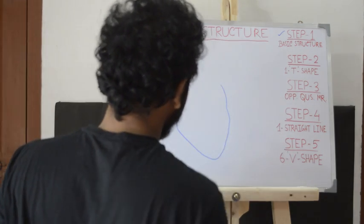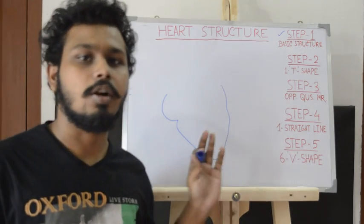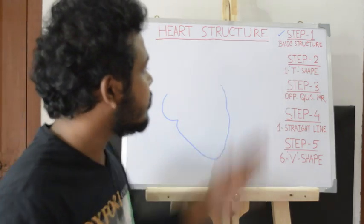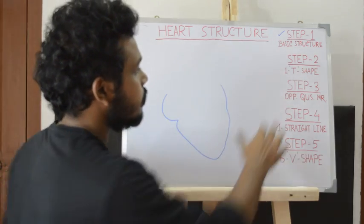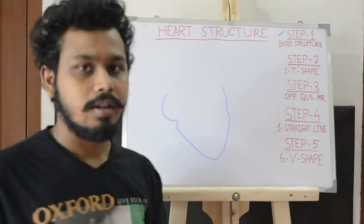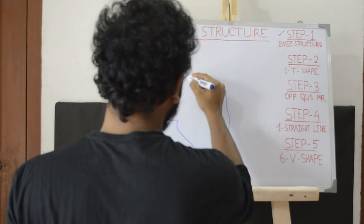This is the basic structure of the heart — that is the first step completed. The second step is a T-shaped structure — one T-shaped structure.